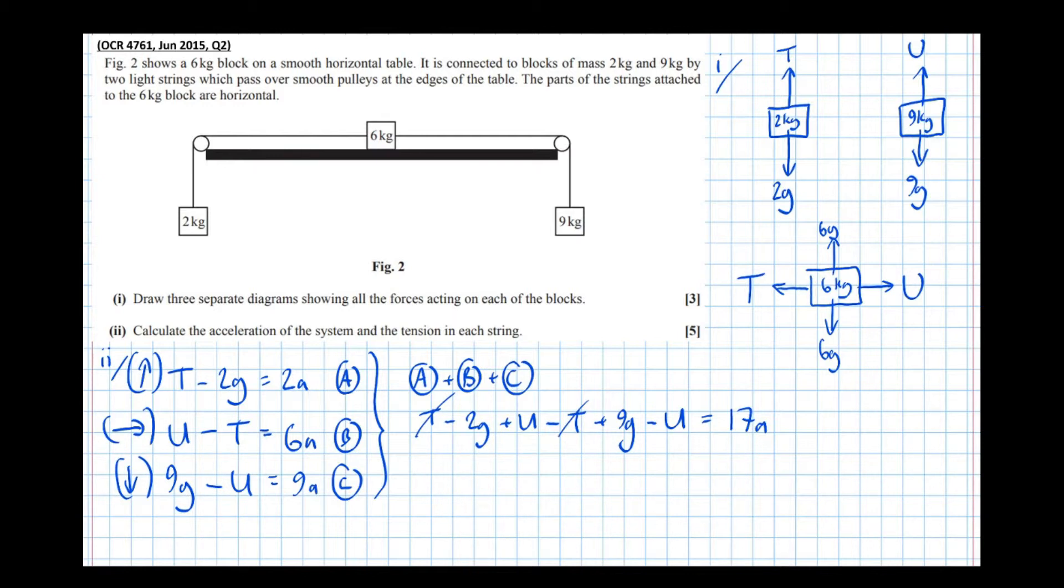U take U, so the U's cancel. To give, so 9g take 2g is 7g equals 17a, which means that a equals 7g over 17. And we've got the acceleration there. Let's put a box around it, make sure that the examiner knows that it's part of our answer. And as with all of these things, I should remember that units are important in final answers. So meters per second squared.